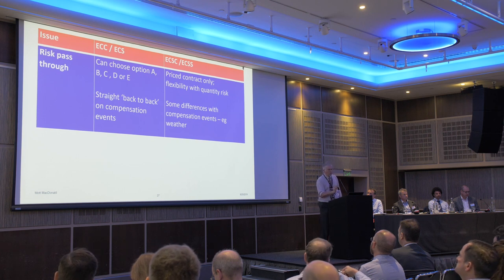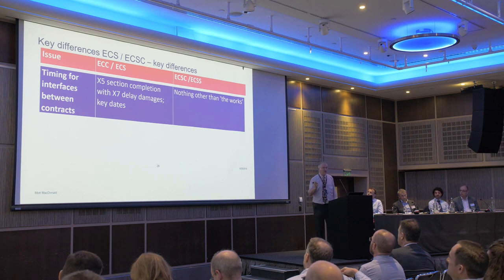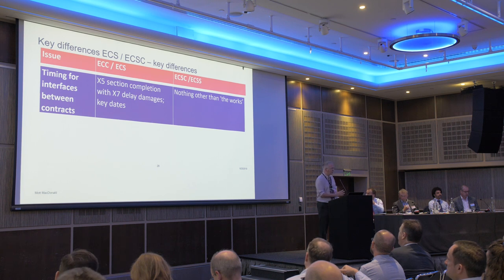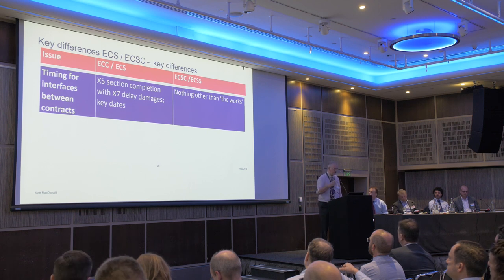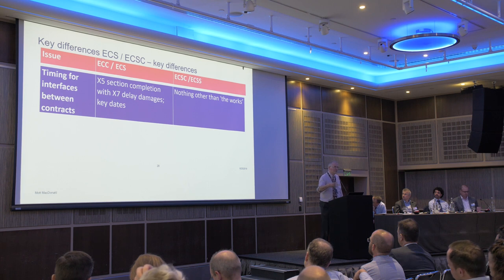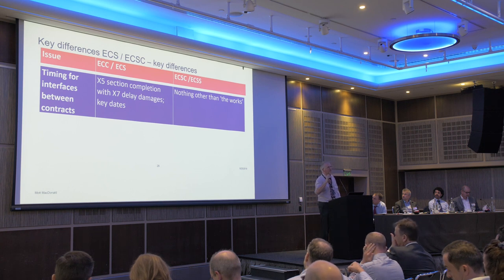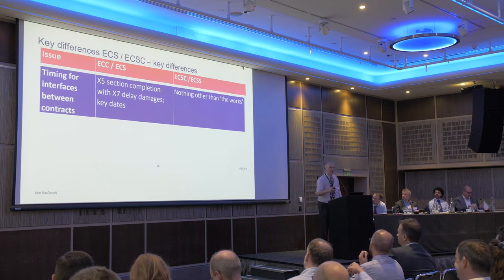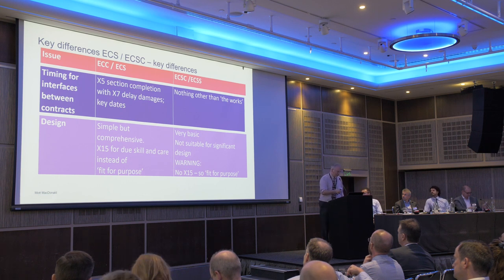Some subtle differences on compensation events — the most obvious being weather: a clear 1-in-10 on the ECC, more simple in theory on the short contract, but there's a mismatch. A contractor ought to be aware of that mismatch. A big issue on timing given all those interfaces: in the ECC you've got sectional completion, delay damages, and key dates. In the ECS you've got nothing — it's just 'complete the works.' So if your short contract has various bits to interface with other contractors, you've got to start adding words to make it work.